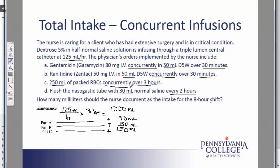In Part D, 30 mL are given every two hours. This flush will happen more than once during the eight-hour shift, so I have a little bit of math to do. I will take the eight-hour shift and divide it into two-hour time blocks. That tells me I will be flushing the NG tube four times throughout the shift. Each flush involves 30 mL, so four times 30 gives the patient an additional 120 mL of liquid.